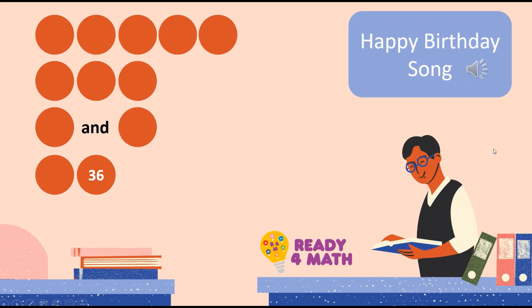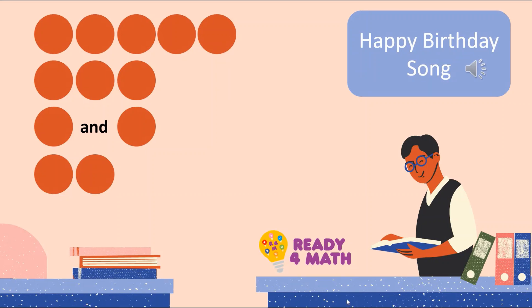Great. Ready? Sing: 3, 6, 9, 12, 15, 18, 21, 24, 27, and 30, 33, 36. Great. Now let's remove the last one: 3, 6, 9, 12, 15, 18, 21, 24, 27, and 30, 33, 36. 3, 6, 9, 12, 15, 18, 21, 24, 27, and 30, 33, 36. Great job.